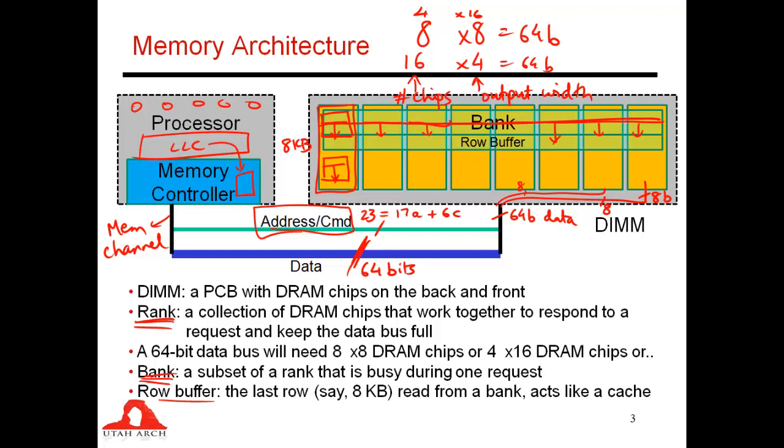So the row buffer is like a cache inside your DRAM chips. It's saying that at a time, I'm always going to keep track of the last eight kilobytes of data, or the last row that was read from a given bank. And if you make requests to the same eight kilobytes of data, then those requests are serviced much sooner. So there's one row buffer associated with every single bank.